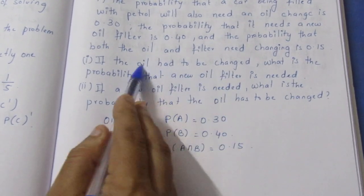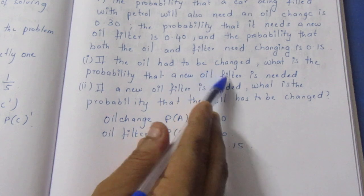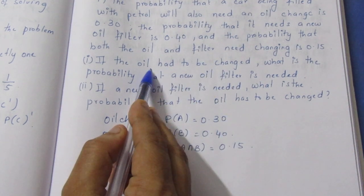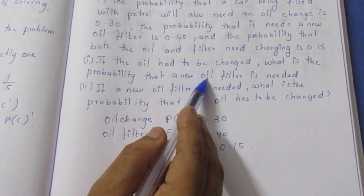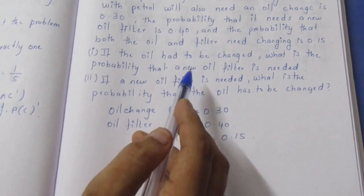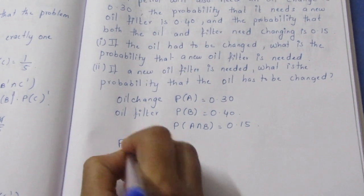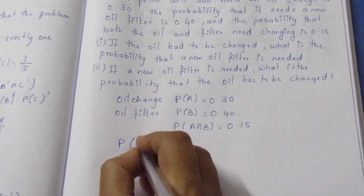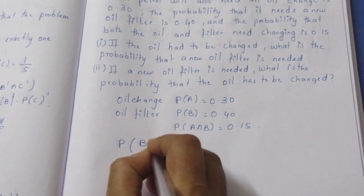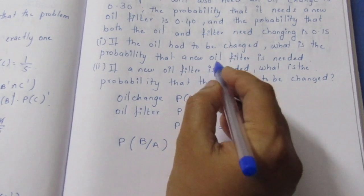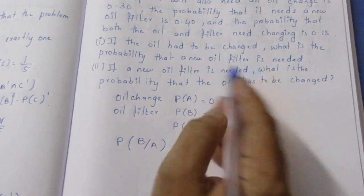If we are given that the oil filter condition applies, we say conditional probability — P of B given A. Why B given A? Because oil filter is B and oil change is A.